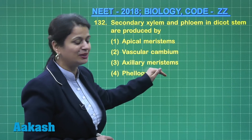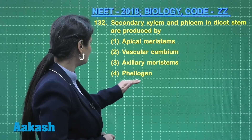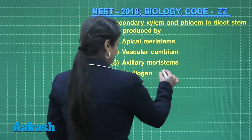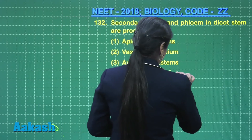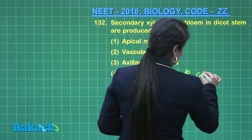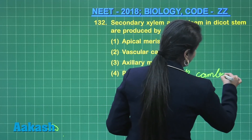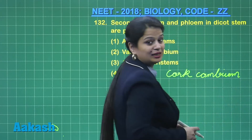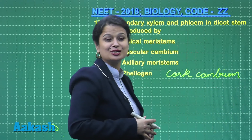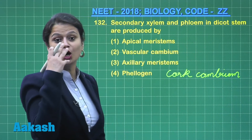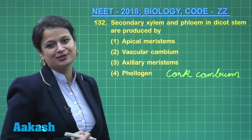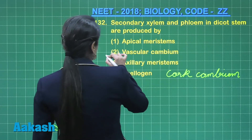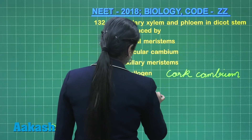Phellogen — yes, it is cork cambium — is involved in the formation of secondary permanent tissue, but not xylem and phloem. It is involved in the formation of the corky layer, which is why it is called cork cambium. So the right answer for question 132 is option number two.